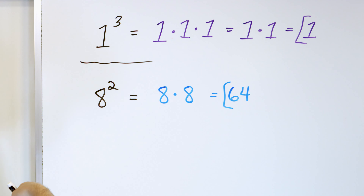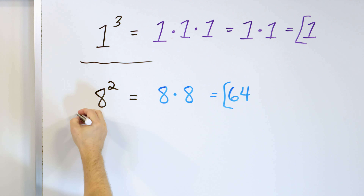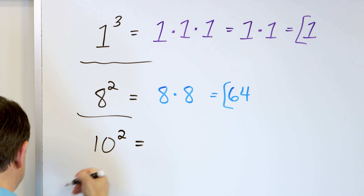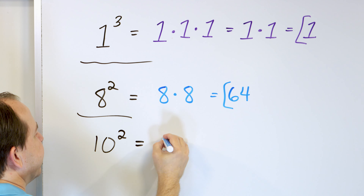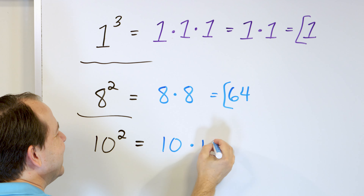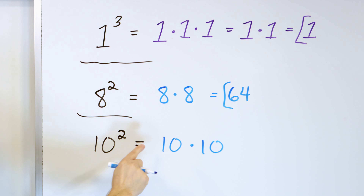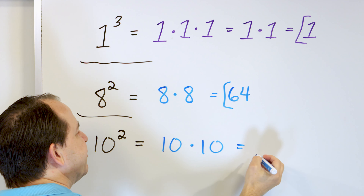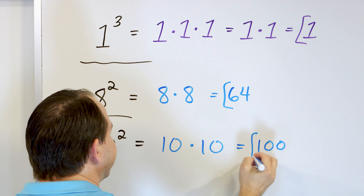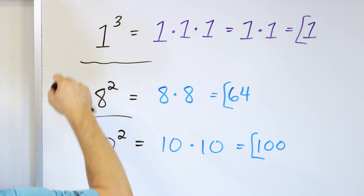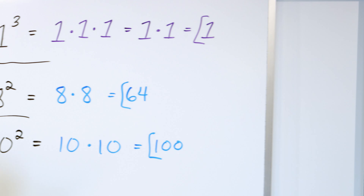What about 10 to the power of 2? Same thing — the bottom number is the base. We multiply it by itself, and we have 2 of them because the exponent is 2. 10 times 10 is 100. You might wonder why I'm doing power of 2 so many times — the truth is the power of 2 pops up so much in real life: in gravity, in electricity and magnetism. The power of 2 is just special somehow — it pops up everywhere.